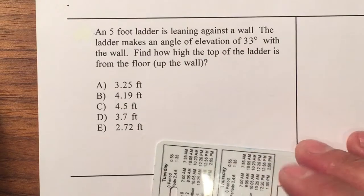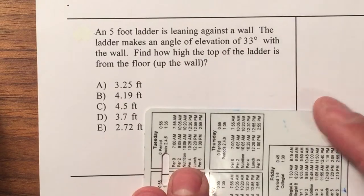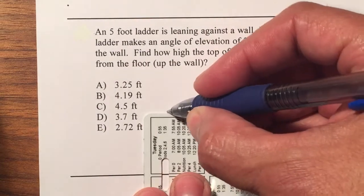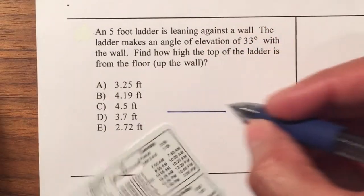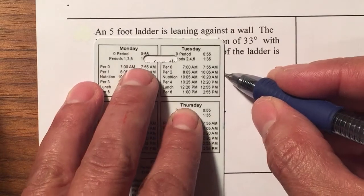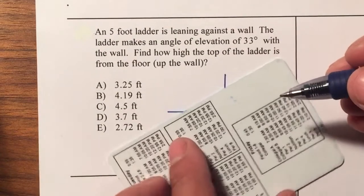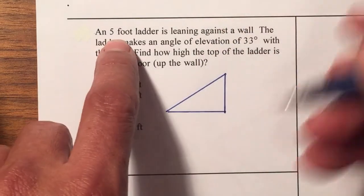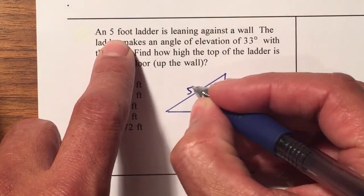So let's go ahead and make a quick picture. We have a ladder that is leaning against the wall. Here's the floor, here's the wall and we have a ladder. This is a five-foot ladder therefore this is five feet.